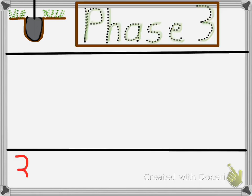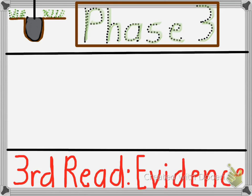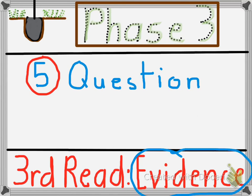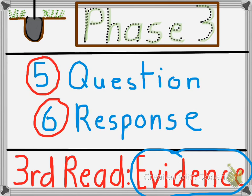In phase three, we are going to dig very deep into the text. Phase three allows us a third read, which has us look at the evidence in the text. Pulling evidence from the text allows us to understand it better. In phase three, step five, the teacher will pose a question and we will have to look in the text, searching for evidence that answers our question. We will also form a response based on what our question is. Our response can be given orally, out loud, or may be written down for deeper analysis.